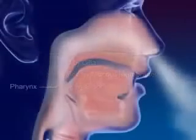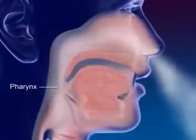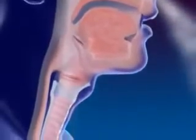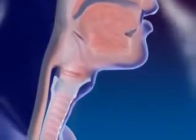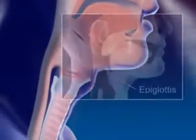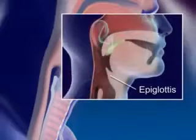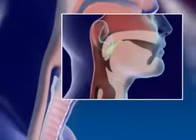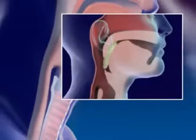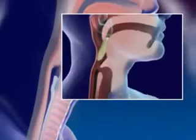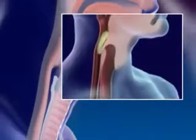Air moves into the pharynx, or throat, the common passageway for food and air. Air continues on to the larynx. The epiglottis, a flap of tissue in front of the larynx, closes off the larynx when swallowing to prevent food from entering.